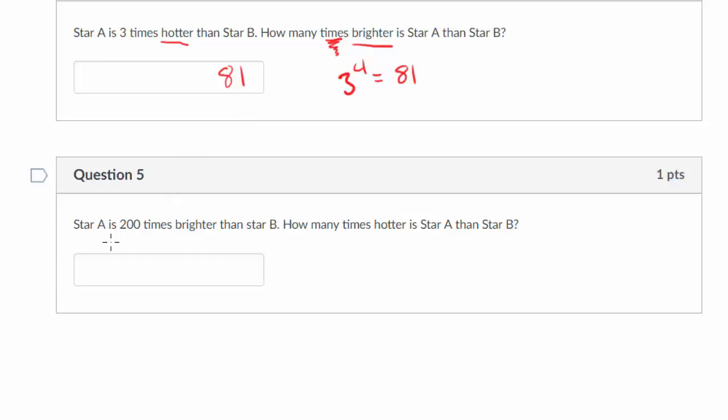All right, let's take a look at the next example. Star A is 200 times brighter than star B. How many times hotter is star A than star B? So brightness goes as temperature to the fourth. It's 200 times brighter. So how is the temperature changed? So in this case, I would say E equals 200. That's my brightness. And T is what I'm trying to solve for. So if I'm starting with this equation, E goes as T to the fourth. I need to get T by itself. How do you undo something raised to the power of four? Well, the algebra here is that you have to take the fourth root of it. So I would take the fourth root of both sides.